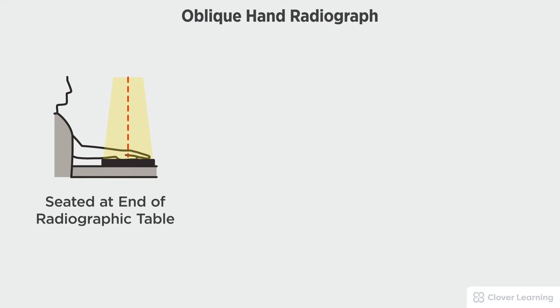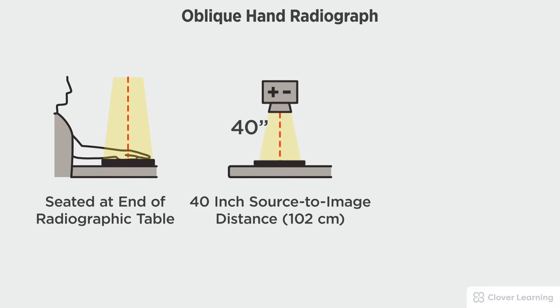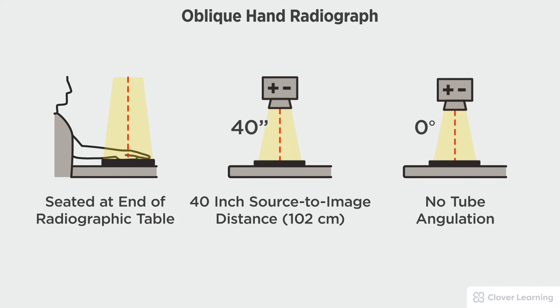In this view we will be demonstrating the oblique hand. The oblique hand should be performed with the patient seated at the end of the radiographic table with the image receptor placed tabletop with a 40 inch source to image distance and no tube angulation.